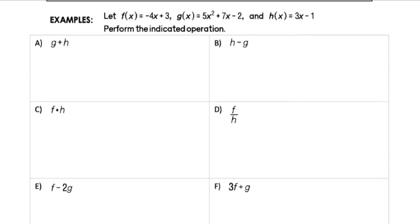Let's do some practice. In these examples we have two functions: f(x) and g(x). Those are our two functions for f and g, and then we have h(x) = 3x minus 1. So those are the three functions we're going to be working with here.